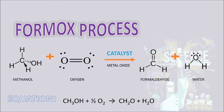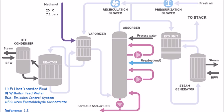Firstly, the methanol inlet at 25°C and 7.2 bar pressure is fed into the vaporizer. Fresh air is fed into the pressurization blower and recirculation blower to give a constant mass flow rate, and is finally fed into the vaporizer. The hot process gas from the reactor acts as a heating medium in the vaporizer.